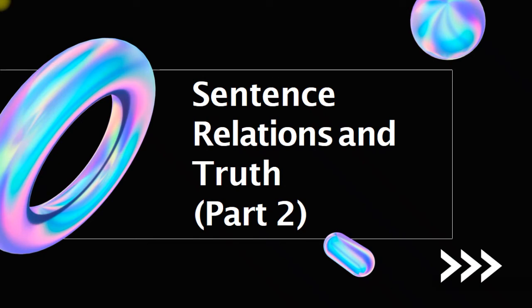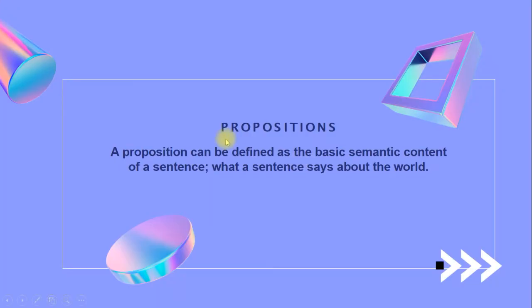This is the second part of sentence relations and truth. In this discussion, we will continue our topic about sentence relations and also the relation with the truth value in each sentence. Propositions can be defined as the basic semantic content of a sentence — what a sentence says about the world. We have talked about propositions in our last discussion, understood as the idea behind a sentence.